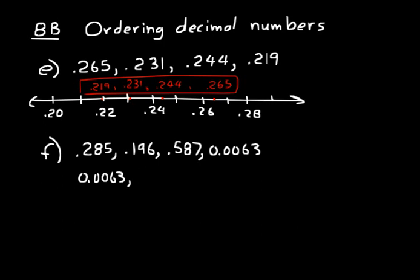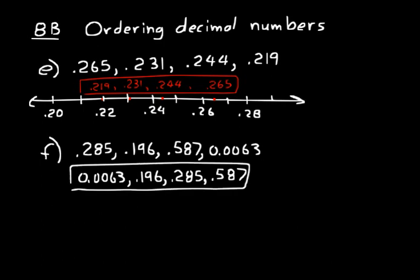And so we'll put .0063 first, then the next thing, if we're thinking of a number line, would be .196, then .285, and then .587 would be last, so that's our order of those decimal numbers there.